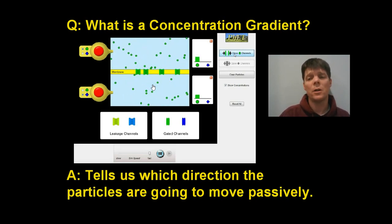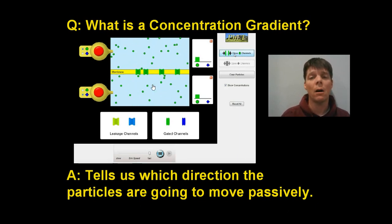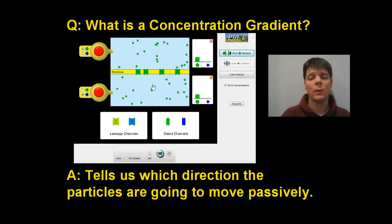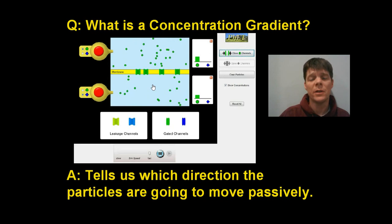If the cell wants to do the reverse of this — if the cell wants to move particles from where they are at a low concentration and put them somewhere where they're already highly concentrated — that's hard work. And to do that, the cell is going to need to use energy. We would call that active transport.